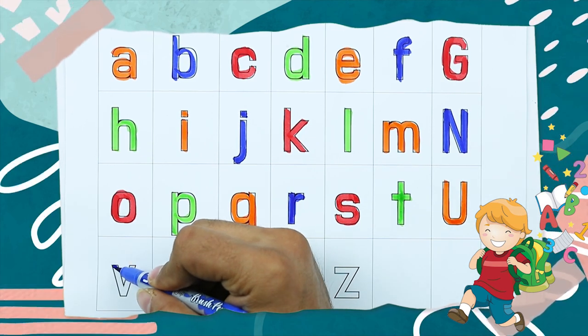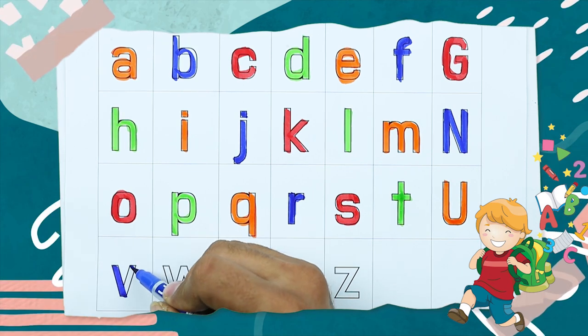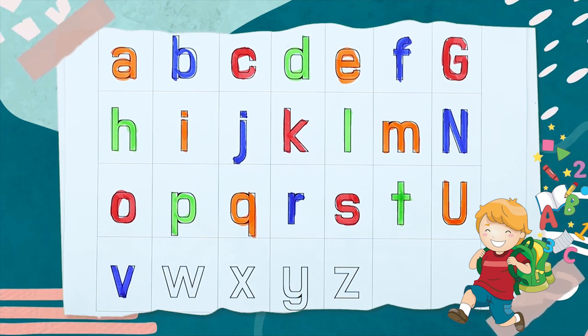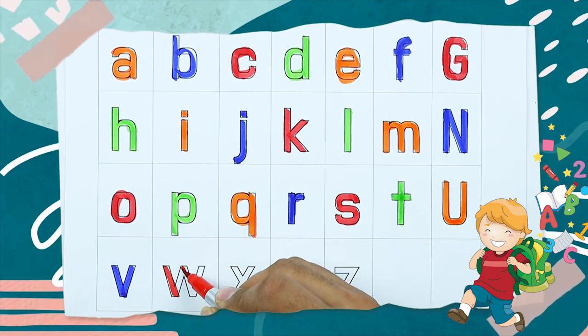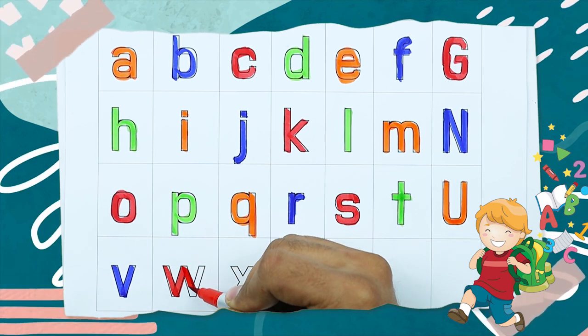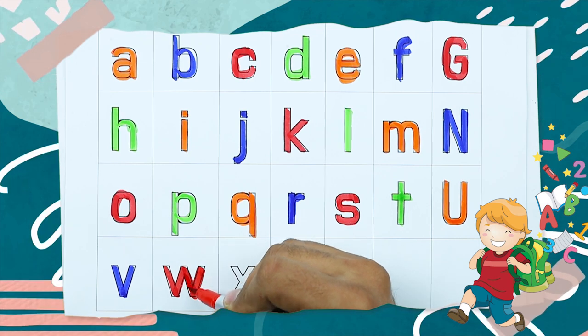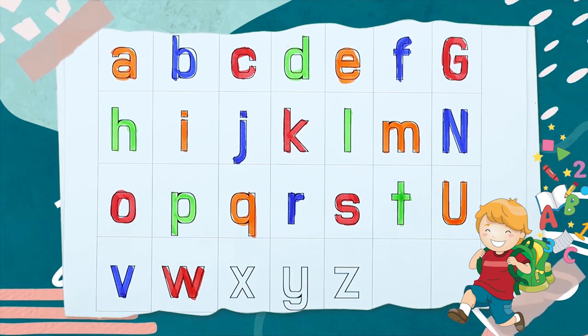V, V for violin, it's V. W, small w with red color, W for watch.